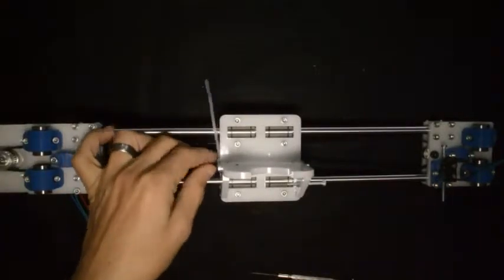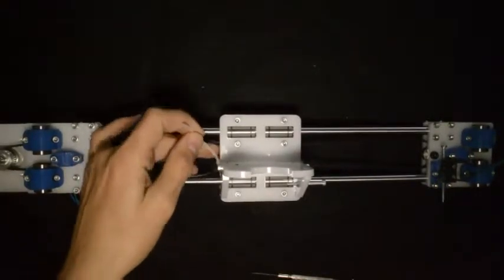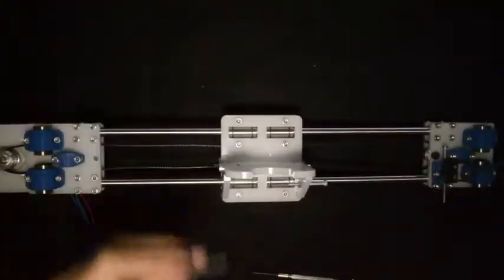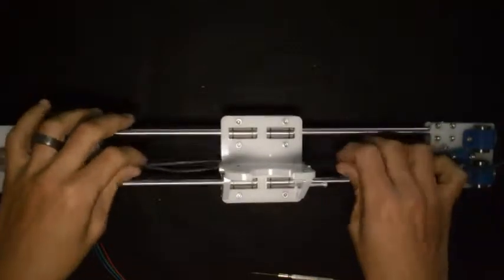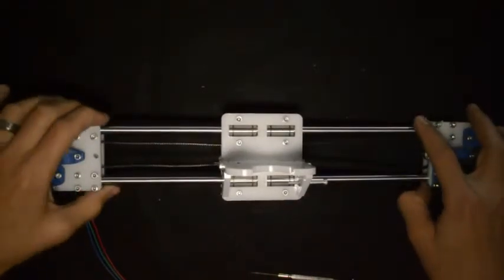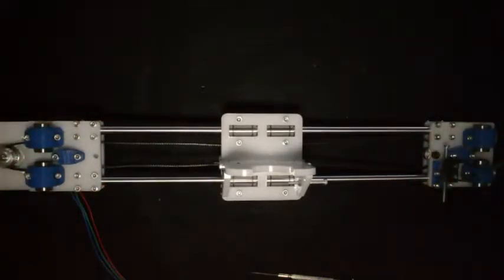Once you've done that, secure it with the cable tie and cut off the end. The belt will not be tightened at this stage. We'll tighten it once we have it on the frame of the printer.